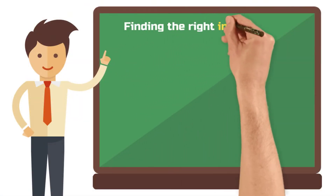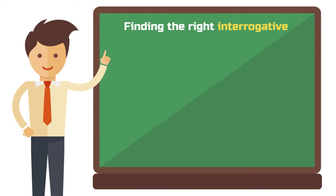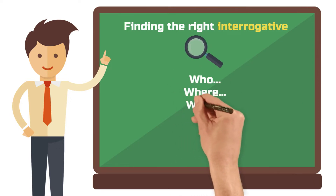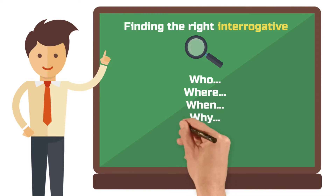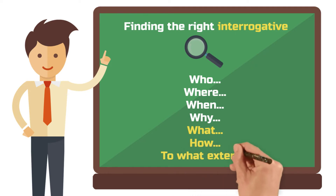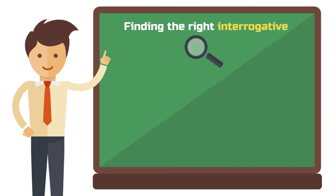If you believe your instinct, all possible W-words would be suitable for a research question. The truth, however, is a little different. The question words how, to what extent, and what are the most suitable question words to formulate your research question. If you are not bound to a particular research paradigm that predetermines the type of research question, I strongly recommend that you begin your research question with the word how.